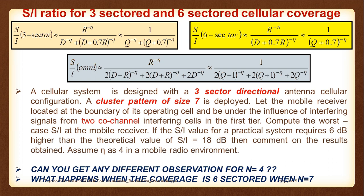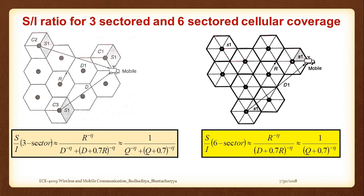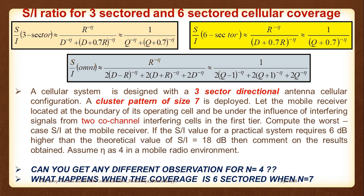When solving numericals, a threshold is given and you check which cluster size satisfies it. Here Q = √(3N) and η is given values like 2, 3, or 4 for the path loss exponent. Only the expression differs between the cases. This ends our discussion on cell sectoring. Remember: this is a worst-case equation, and the best-case solution is purely for calculation purposes and is not practical.